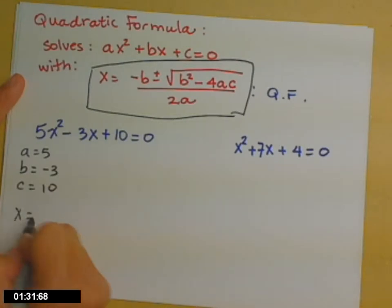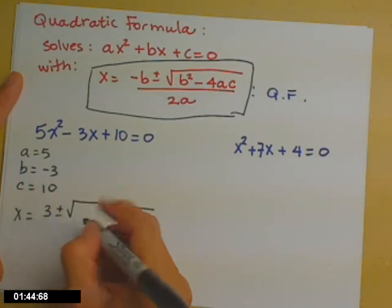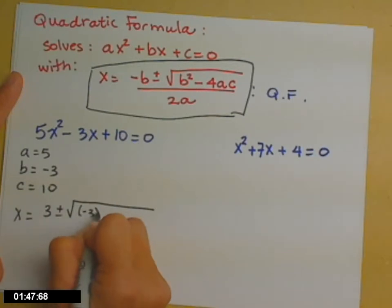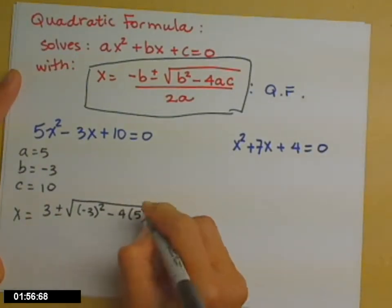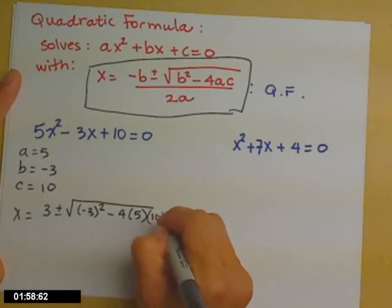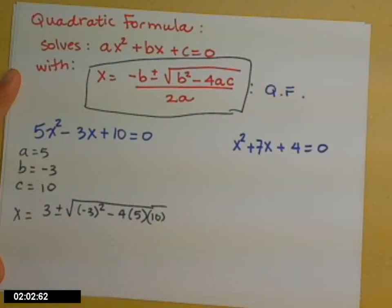So x equals negative b. Well, b is currently negative 3, so I need to change that to a positive 3. Negative negative makes a positive. So 3 plus or minus square root—and here's another tricky part. I need b squared. b is the whole number, the entire number, negative 3. I need that whole thing squared, so that first one under the radical is always positive. Minus 4 times 5 times 10, 4ac. The minus sign is part of my formula, so that minus sign is there for that.